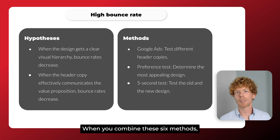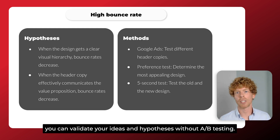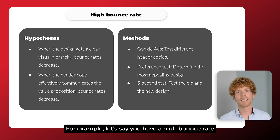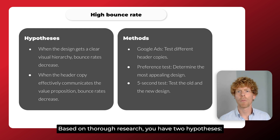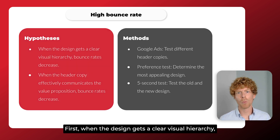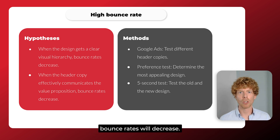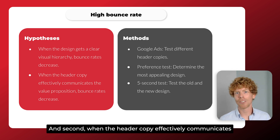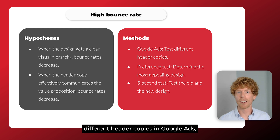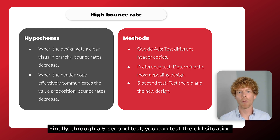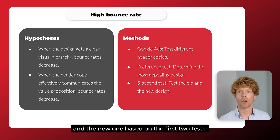When you combine these methods, you can validate your ideas and hypotheses without A-B testing. For example, let's say you have high bounce rates on your most important landing page. Based on thorough research, you have two hypotheses: first, when a design gets a clear visual hierarchy, bounce rates will decrease; and second, when the header copy effectively communicates the value proposition, bounce rates decrease. This can be validated by testing different header copies in Google Ads and determining the most appealing design through a preference test. Finally, through a five-second test, you can test the old situation and a new one based on the first two tests.